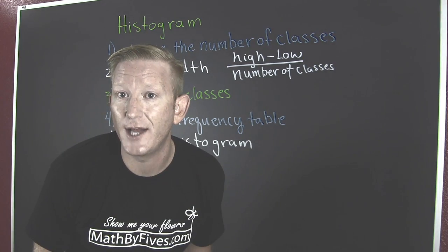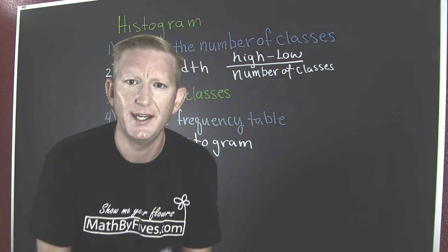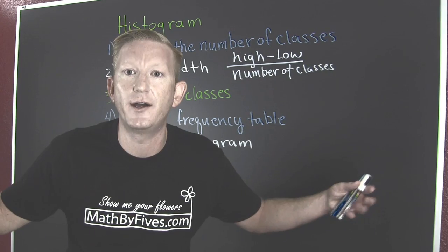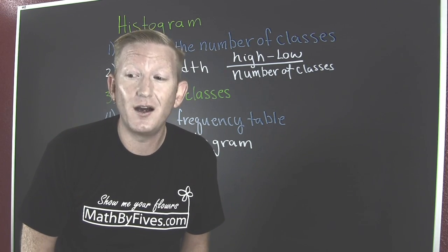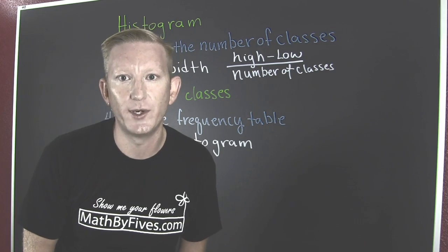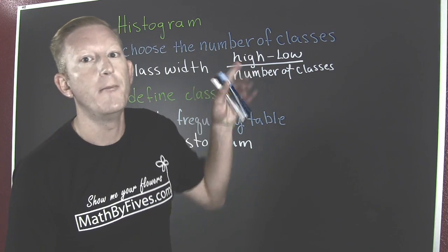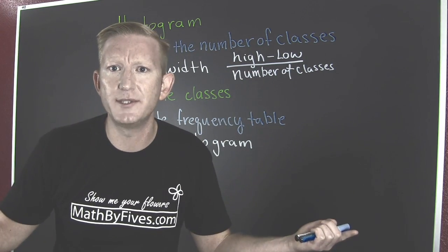If we chose 24 classes, then our data wouldn't have a chance to accumulate. It would be spread much too far. If we chose just one class, then our data is going to accumulate in that one category, and it's going to be 24 tall. But, we don't want that. We want a representative sample.